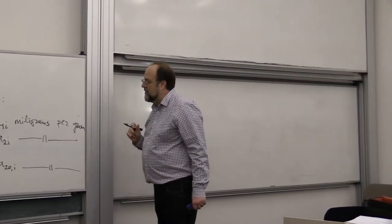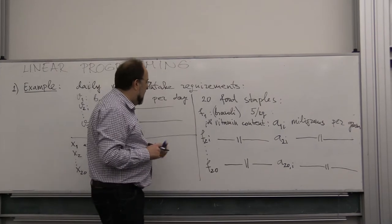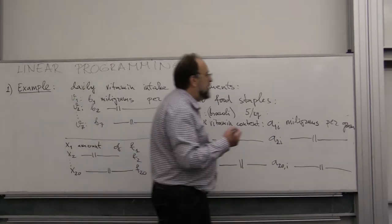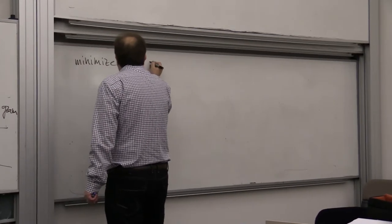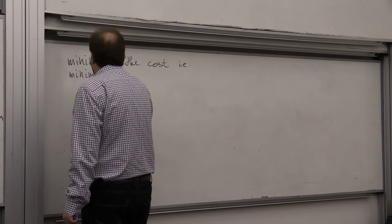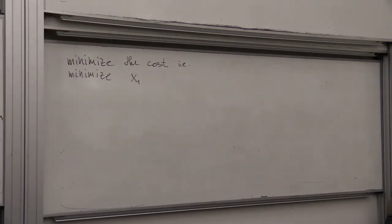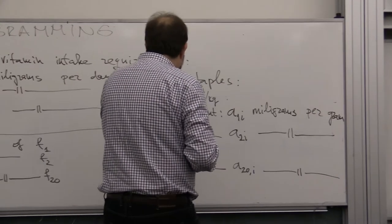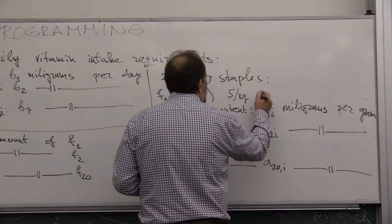Her goal is that I get all the vitamins. First of all, she wants to minimize the cost. So she wants to minimize the cost. We need variables for vitamin content and prices as well. So this will be price P1, here we will have price P2, and here price P20.